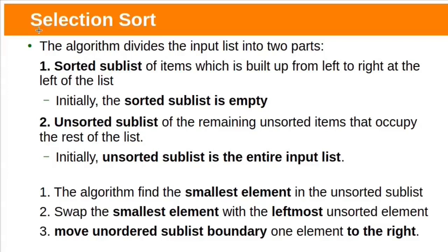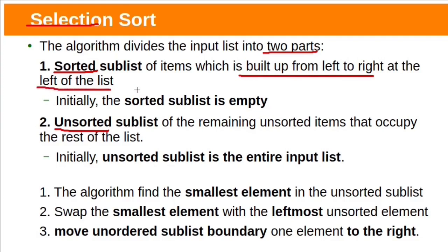We have already seen bubble sort algorithm, now let us see selection sort algorithm. Sorting algorithms arrange elements of a collection into an order, like ascending or descending order. The selection sort algorithm divides the input into two parts: sorted sublist and unsorted sublist. This sorted sublist is built from left to right, at the left of the entire list. Initially the sorted sublist is empty and the remaining unsorted items occupy the rest of the list. Initially the unsorted sublist is the entire input list.